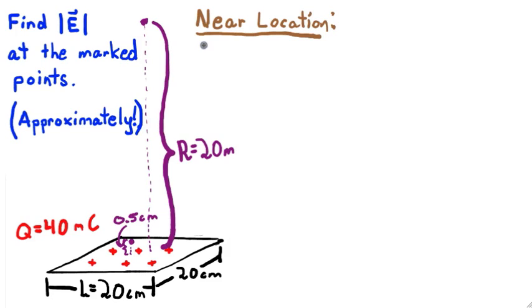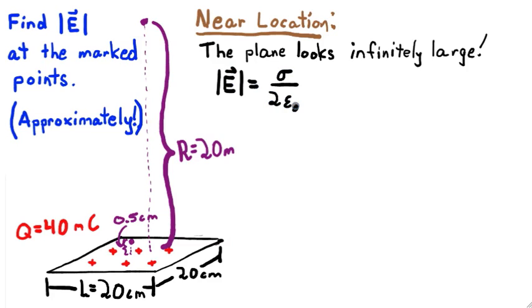In physics, infinity is often a good approximation to very large, and this is one of those cases. We can use the formula for the electric field of the infinite plane, substituting in the charge over the area for charge density. Now, and only now, we are ready to plug in some numbers.